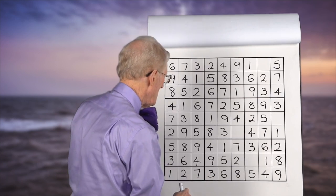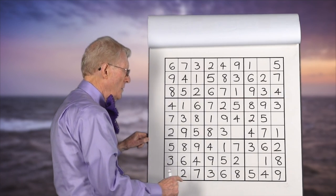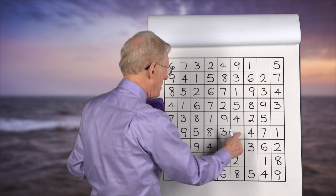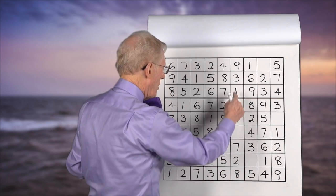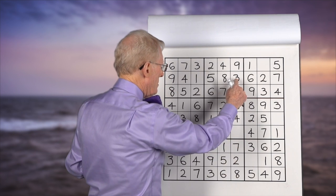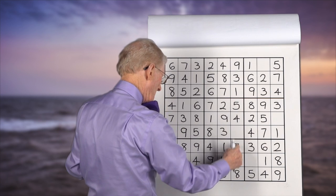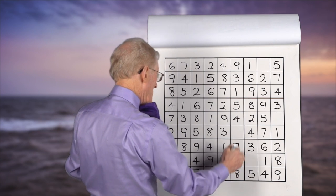Now we can go to this column. And this block has an empty cell and this column has an empty cell. So we go 1, 2, 3, 4, 5... I think it's a 6. It's a 6.